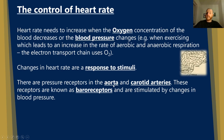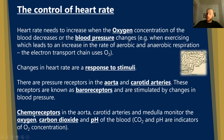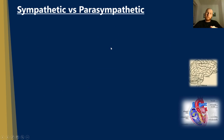There are pressure receptors in the aorta and carotid arteries. The carotid arteries are the arteries just above the aorta where it branches off. These receptors are known as baroreceptors and they're stimulated by changes in blood pressure. Chemoreceptors are also found in the aorta, the carotid arteries, and also the medulla. They monitor the oxygen, carbon dioxide, and pH of the blood. CO2 and pH are indicators of oxygen concentration, because if oxygen concentration drops too low, it could lead to the death of the organism.